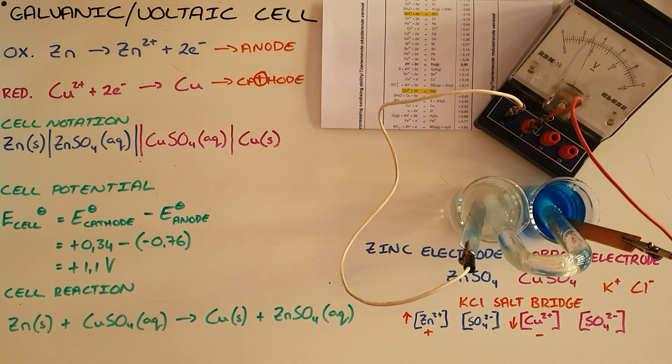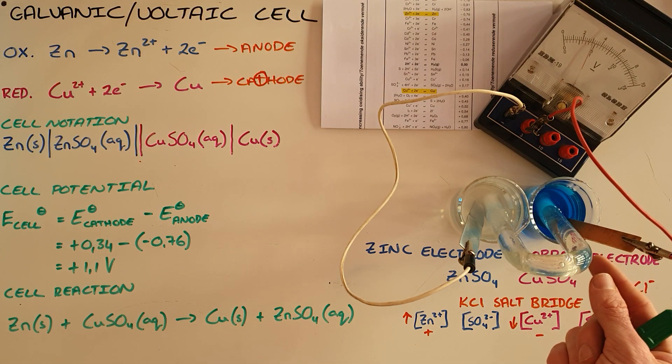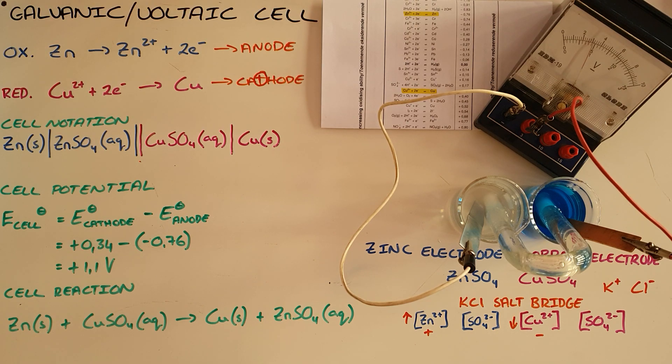And finally, we can see that the electrons are flowing through the external circuit, that being the wires out here, from the zinc electrode, which is the anode, which is negatively charged. The electrons are repelled from that electrode and attracted towards the positive electrode, that being the cathode, where they then undergo reduction with the copper. That's very important, though.